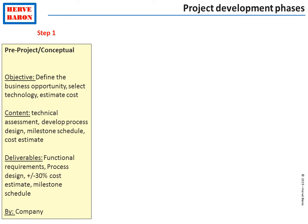Since step two, which will be further refining the technical feasibility of the project, will involve a significant amount of expense, at the end of step one there is a gate where the decision is taken based on the assessed attractiveness of the project, whether to proceed to step two or not.